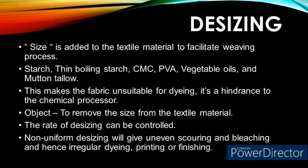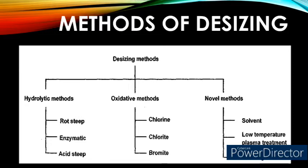The process of removing size from the gray fabric is called desizing. There are three different methodologies for desizing: number one, hydrolytic methods; number two, oxidative methods; and number three, novel methods.